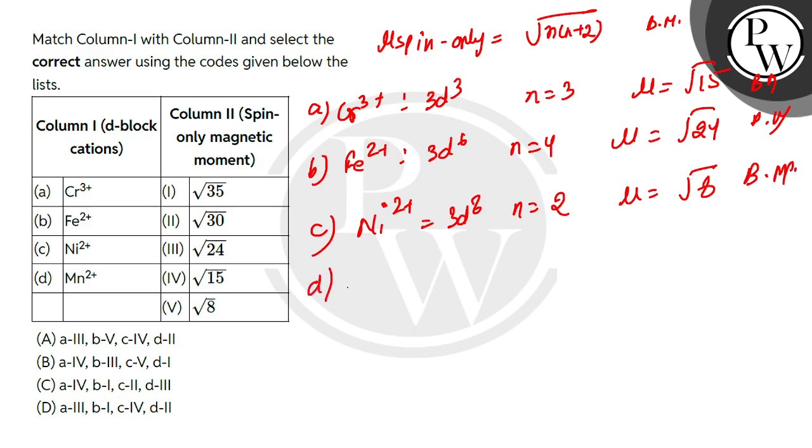So μ ki value kya ho jayegi: 2(2+2) is 4, so μ ki value kya ho jayegi √(2×3) = √6. And for Mn²⁺, √35.